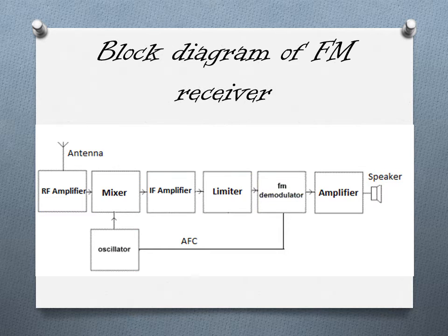The IF amplifier takes this intermediate frequency and amplifies it. The limiter then removes the noise from the incoming input and passes it on to the FM demodulator. The FM demodulator has the task of extracting the audio signal from the carrier wave. Some of the audio signal is also passed as automatic frequency control back to the oscillator — this acts as a negative feedback. The audio signal is then passed on to the amplifier, which amplifies it and passes it on to the output. Now Harsh is going to explain more about the function of the circuit.